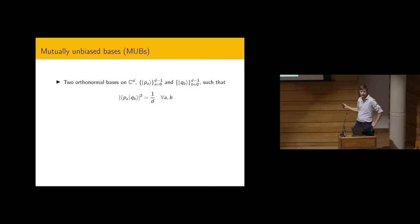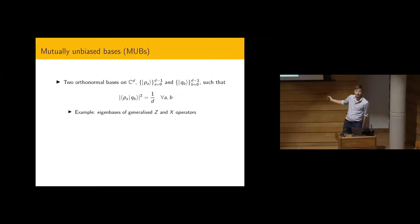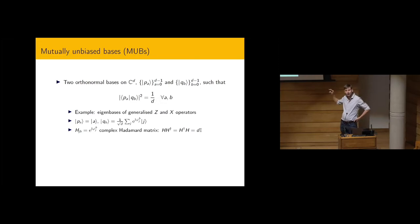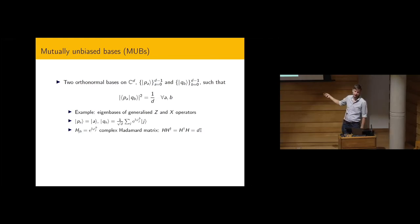I'll start with mutually unbiased bases, or MUBs — not the same as mutually unbiased measurements, keep in mind. These are two orthogonal bases on a finite dimensional Hilbert space such that the overlaps between any two vectors from different bases are uniform. Examples include the eigenbases of the generalized Z and X operators, like the clock and shift operators. Collecting the phases in a matrix gives what is called a complex Hadamard matrix, where every element is a unit complex number — essentially an unnormalized unitary.